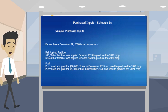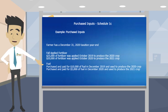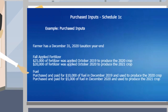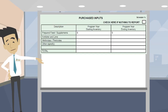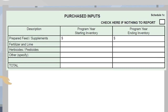Now we'll start filling out the form. Please note that in this example, Farmer Joe has a December 31st, 2020 taxation year-end. Using our tips as a guideline, this is a list of purchased inputs that Farmer Joe has come up with. Now, how do we enter the information that Farmer Joe has given us on his purchased inputs into Schedule 1C?